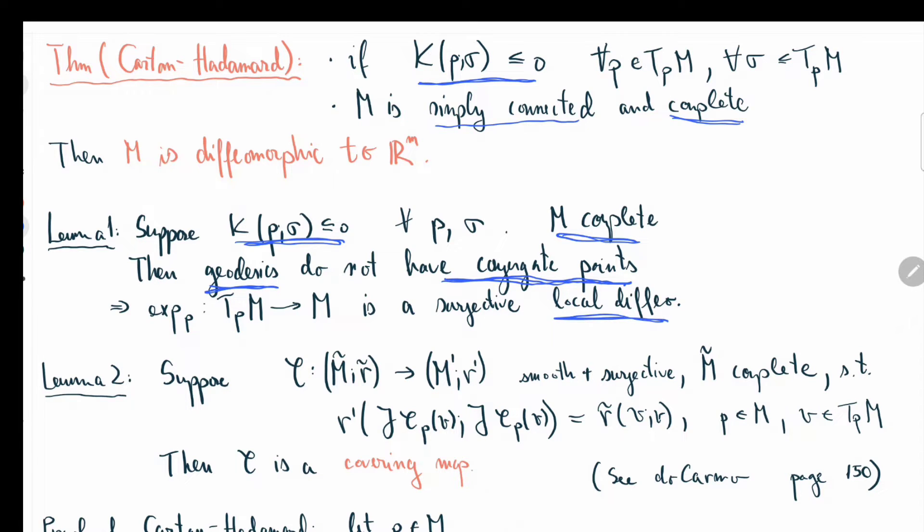This implies that the exponential map is always a local diffeomorphism. This is a result that we argued—the conjugate points are exactly the points where the exponential map has degenerating Jacobian. So if you do not have conjugate points, then the Jacobian of the exponential map cannot degenerate, hence it's always a local diffeo. Surjectivity of the exponential map follows from completeness, by the Hopf-Rinow theorem, whose proof I've given in the previous video.